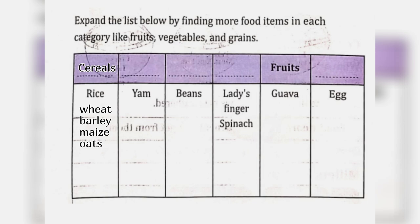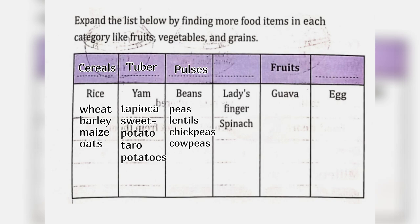Next is tubers. Under tubers we can write: Yam, tapioca, sweet potato, taro, potatoes. Next will be pulses. Under pulses we can write: Beans, peas, lentils, chickpeas, cowpeas.